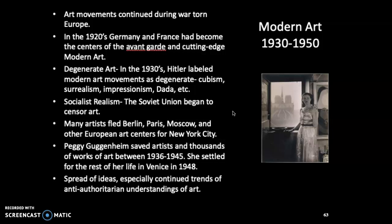Peggy Guggenheim was a socialite, but she was also part of the avant-garde movement — kind of a bohemian. She had been living in Paris and was friends with Marcel Duchamp, and was married at the time to a surrealist artist. And she was Jewish.